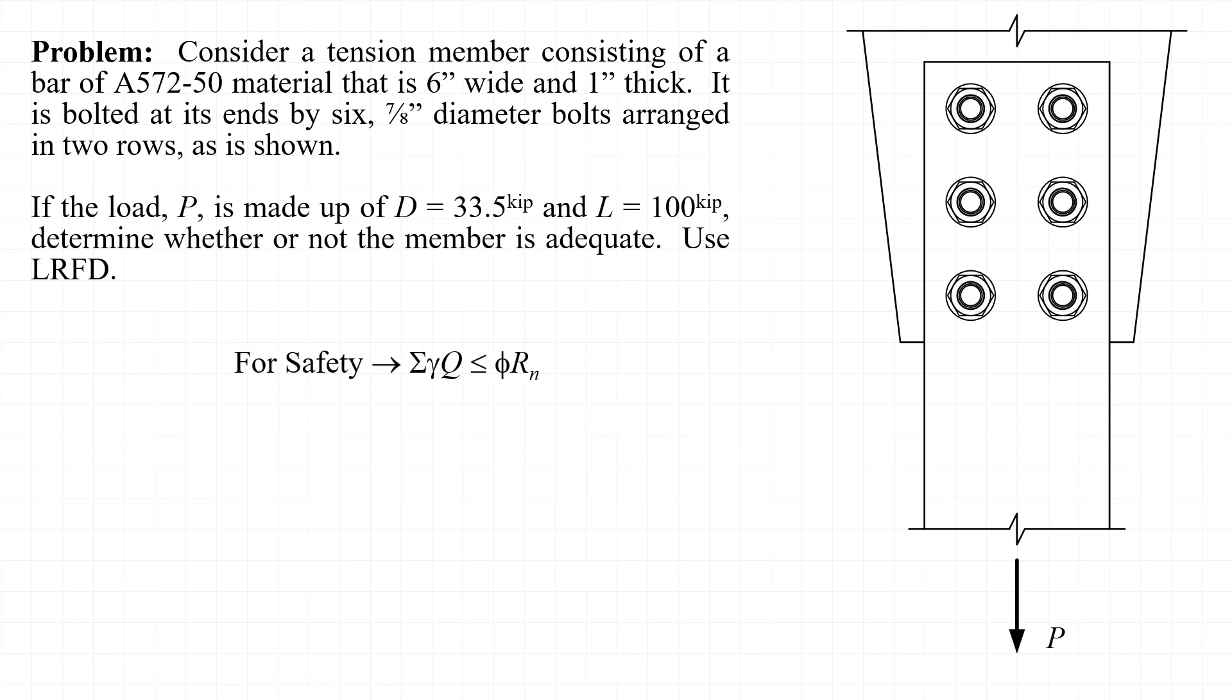The fundamental equation that we evaluate is that the sum of gamma times Q should be less than or equal to phi times R sub n. Or in other words, the factored loading should be less than the factored resistance for the member.